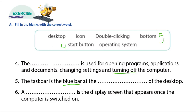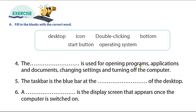Question five: the taskbar is at the bottom of the desktop. It is a blue bar at the bottom of the computer. Question six: a blank is the display screen that appears once the computer is switched on. This is the first screen when you turn on the computer — we call this the desktop. Desktop is the first screen when you turn on the computer.